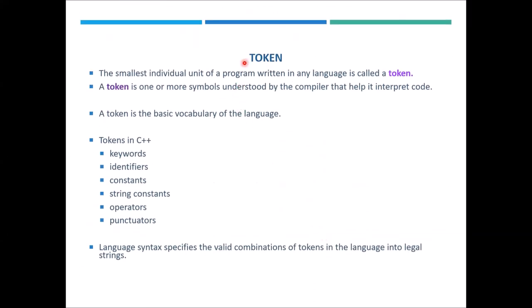Next, my discussion is about tokens. What is a token? It's not just a technical term — in C++ we use multiple things: different variables, different keywords, different constants, and different operators. Everything we use to create a program is termed a token.